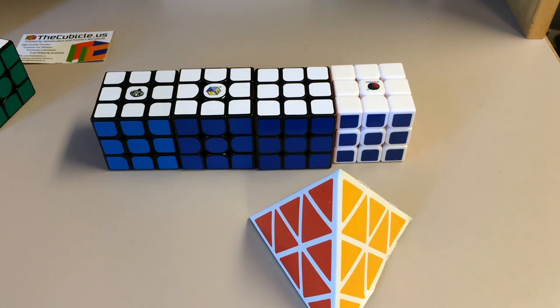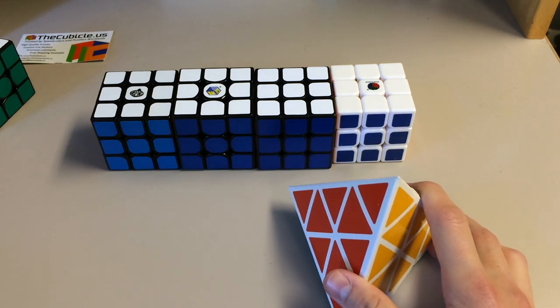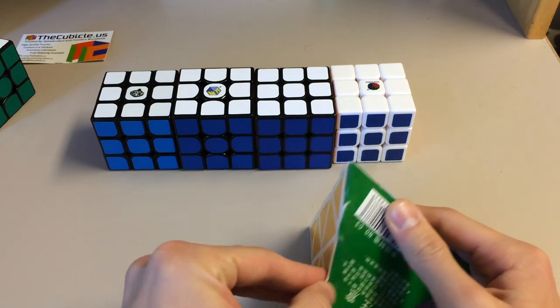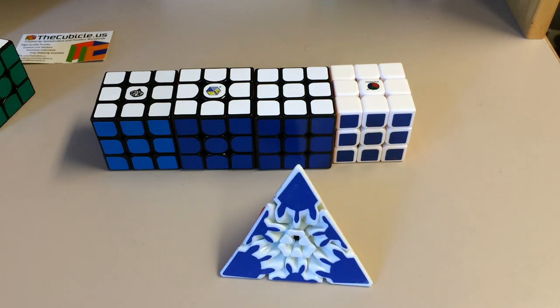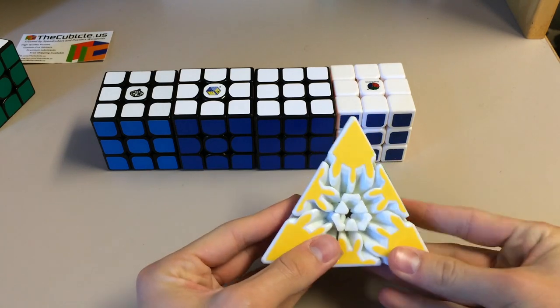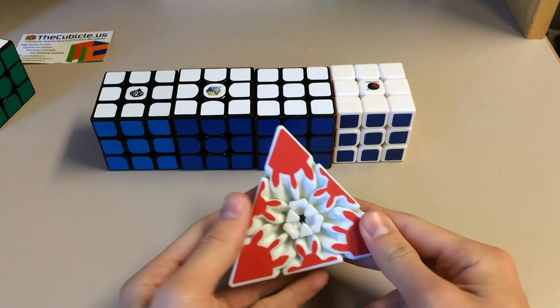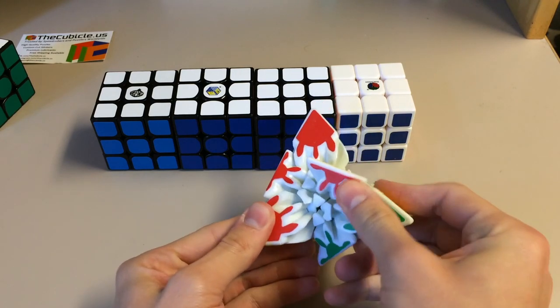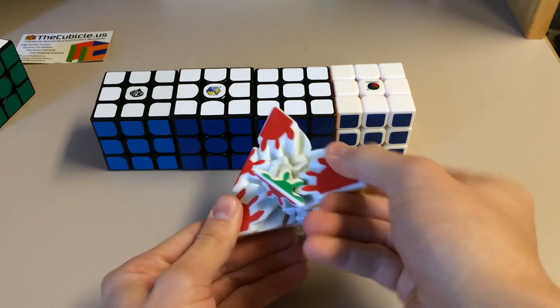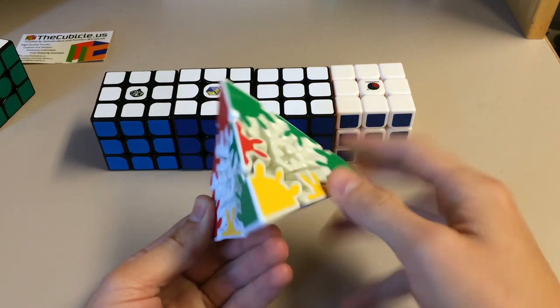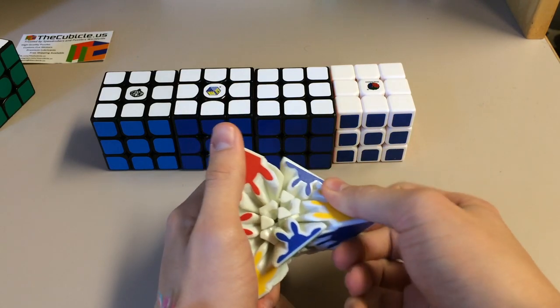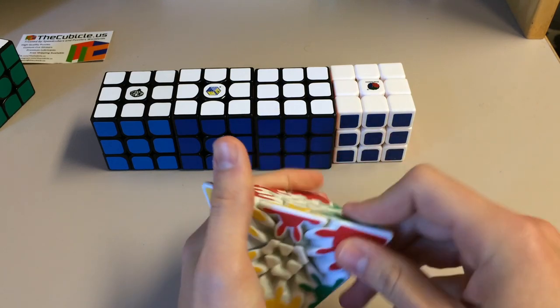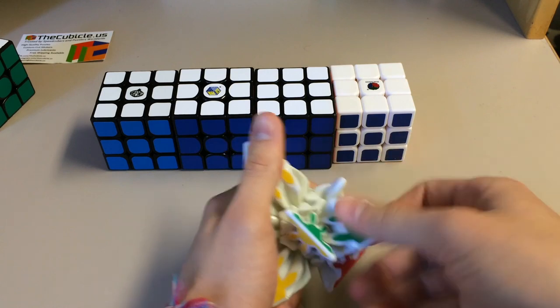I hope I'm pronouncing this correctly, but this is the Heshu Gear Pyraminx. This is only $8 on thecubicle.us, and I'll have links to where you can buy all of these in the description. And I guess I will rip apart this box. Sorry to tear apart the box, but I got the puzzle out. And so here is the Heshu Gear Pyraminx. I'm just going to go along with Heshu for the rest of the video. So here's the Gear Pyraminx. Let's go ahead and do first turns. It's not that bad. It functions well. I actually don't want to scramble it, so I'm just going to go ahead and leave that. But let's see if I can get it back.